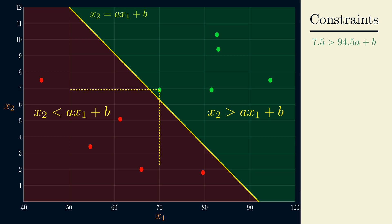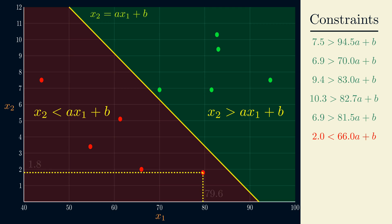Each point will give us a constraint we need to satisfy. Since we have 10 points here, we have 10 constraints in total.